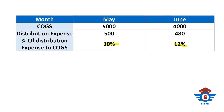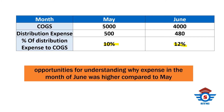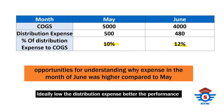This tells us an opportunity for understanding why expense in the month of June was higher compared to total cost of goods sold, and hence we can identify areas for controlling the cost factor. In an ideal situation, distribution expense has to be low to show better performance of the organization.